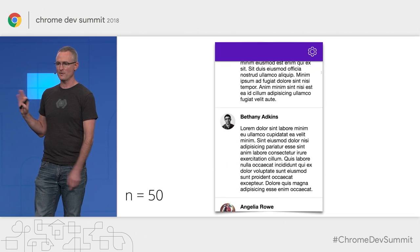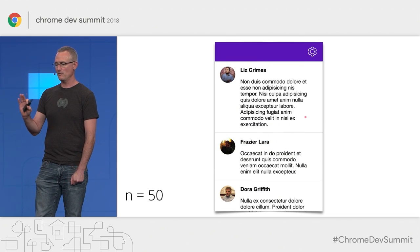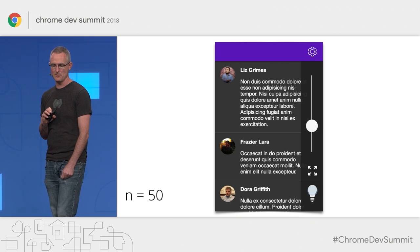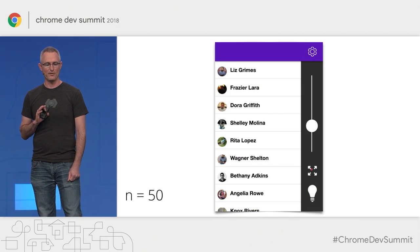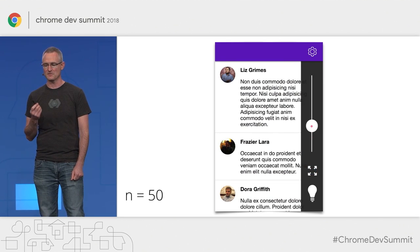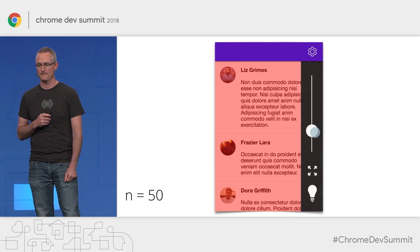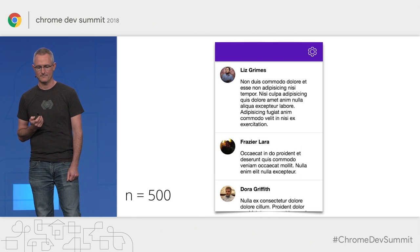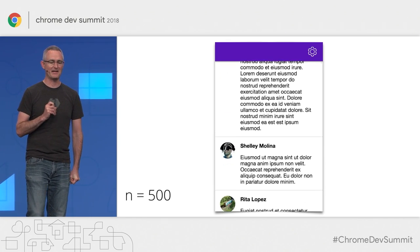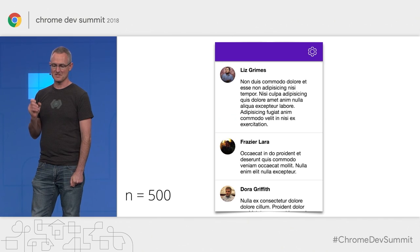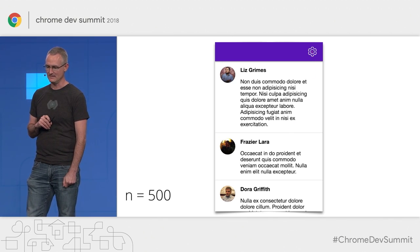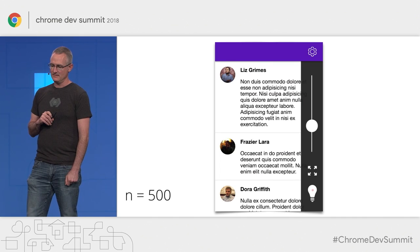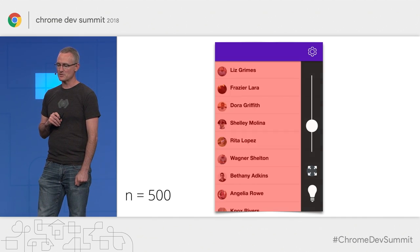At 50 items we're not too bad, although there are noticeable delays for the mode switches and some sluggishness as we start moving the slider. But where we really start feeling the pain is when we get up to 500 items or more. The lagginess in this example is going to be impossible to miss. When we go to dark mode or compact mode there's a very noticeable lag, and the slider is virtually unusable — it's so slow to update.